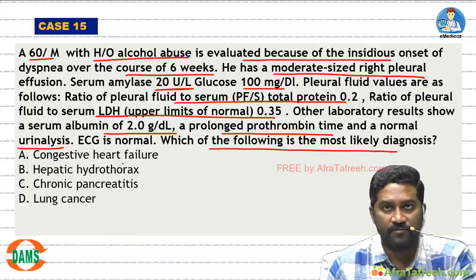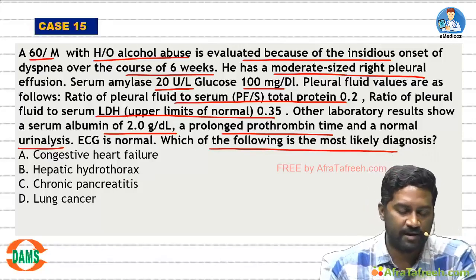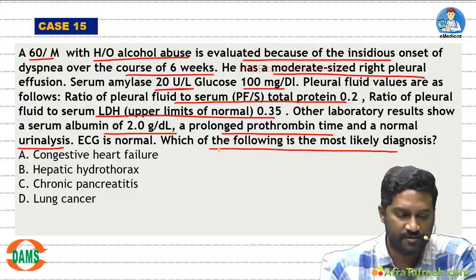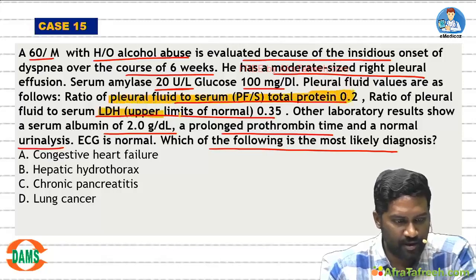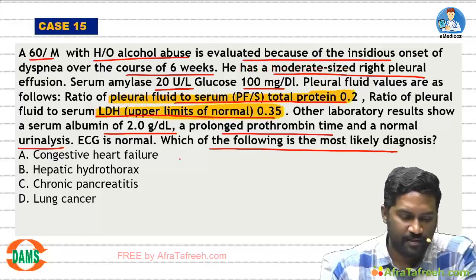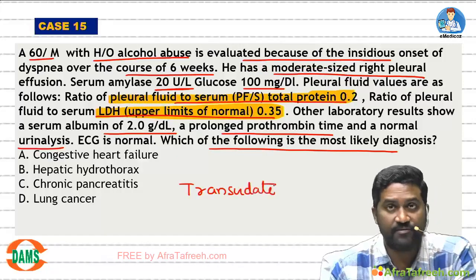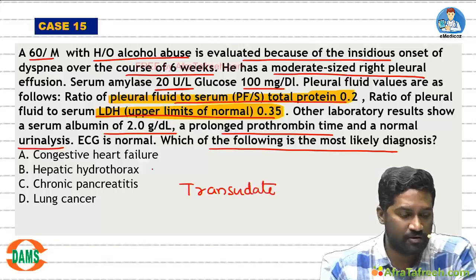Whenever they give you any question on pleural fluid analysis, first know whether it is transudate or exudate. By the data, the protein ratio is 0.2, LDH ratio is 0.35. This is a transudative effusion. Whenever there is a transudative effusion, think about heart cause, liver cause, kidney cause.